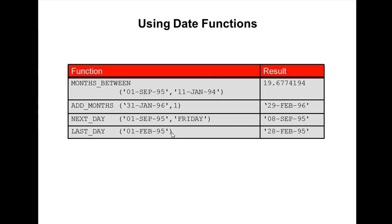In the same way, NEXT_DAY: when you want to know the next occurrence of a day from a given date — for example, the next Friday — you give two arguments: first is the date, second is the day name. You will get a result like 8th September 1995. And LAST_DAY of the month can be found using LAST_DAY.